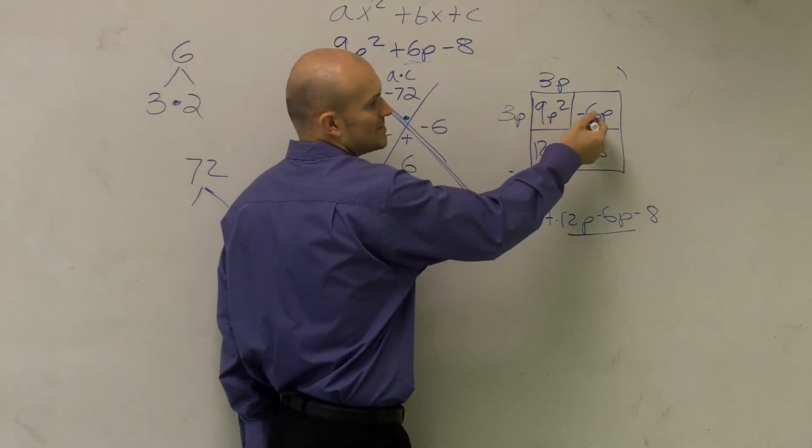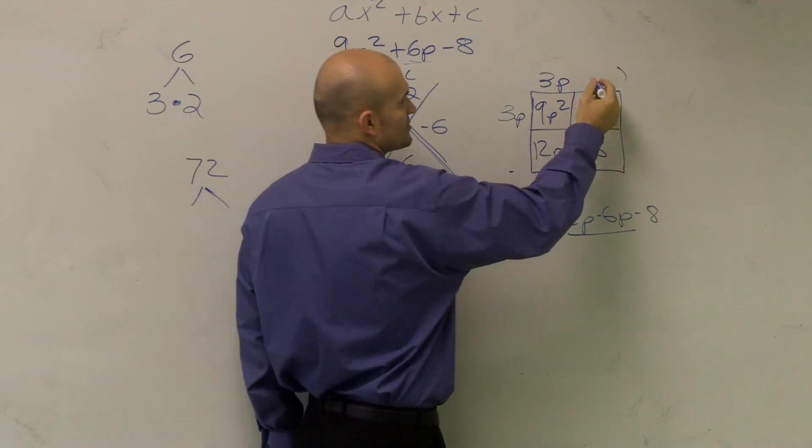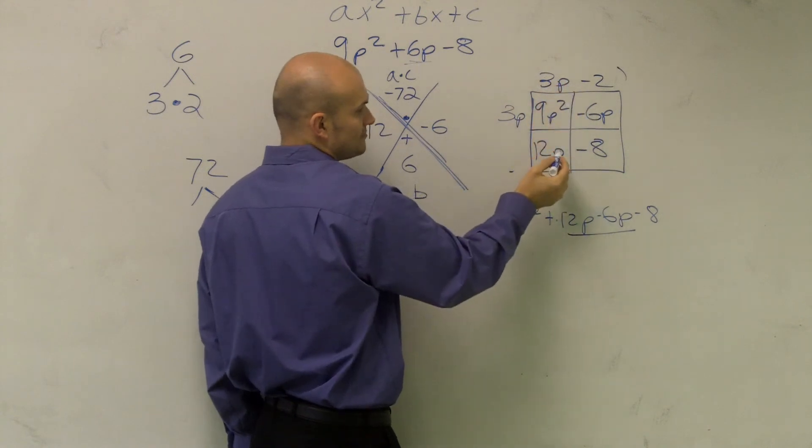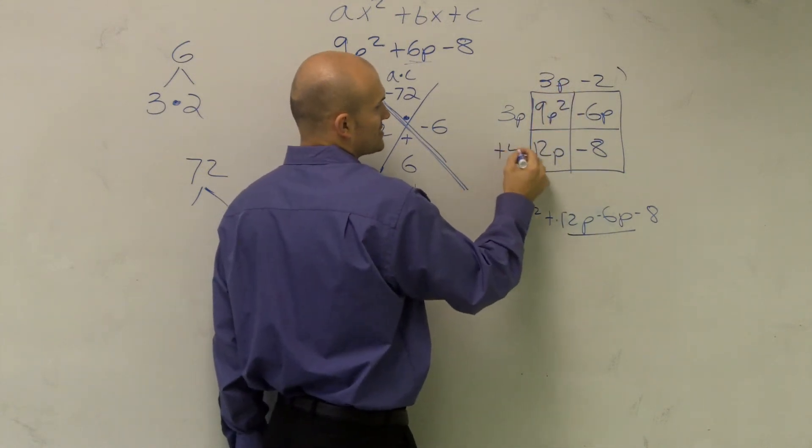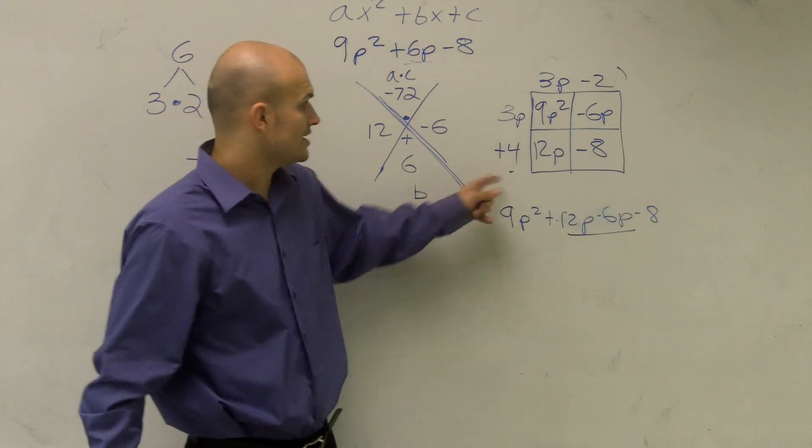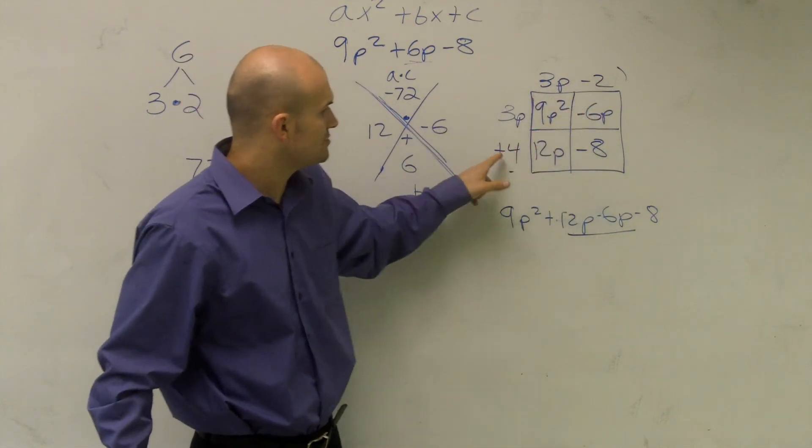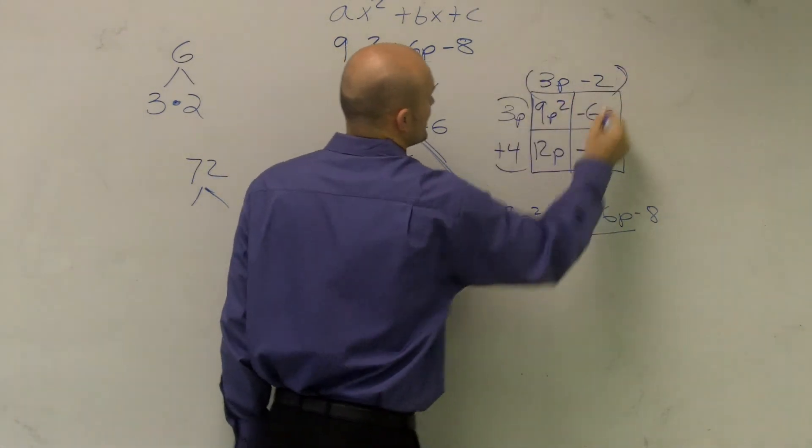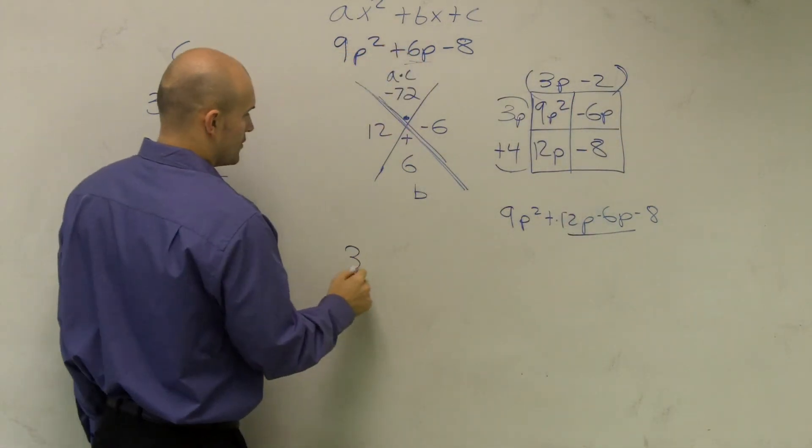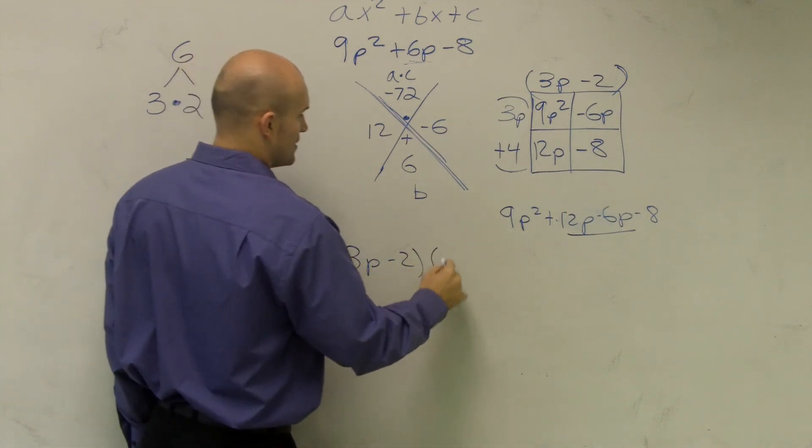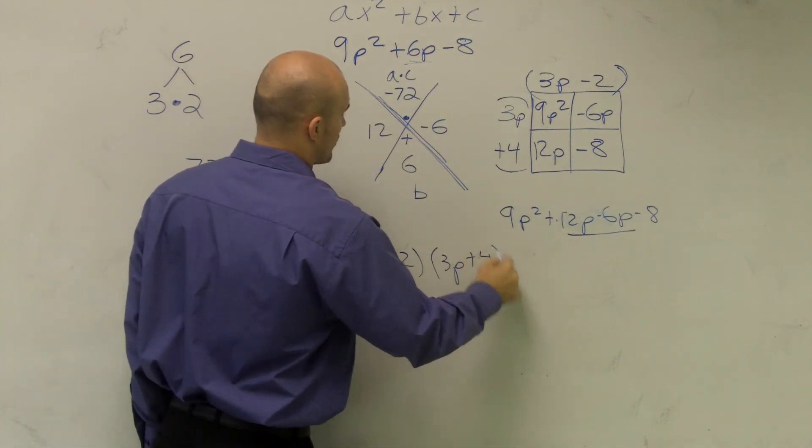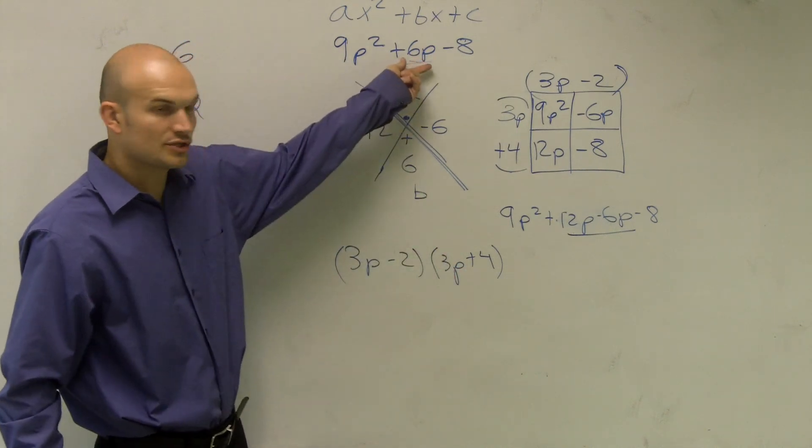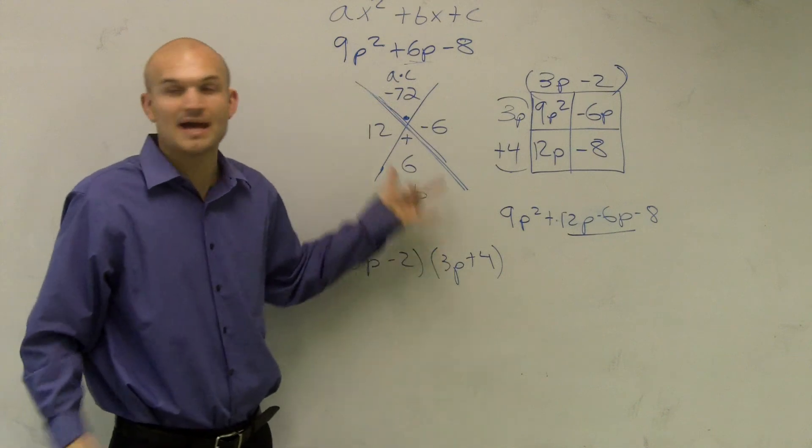3p times what gives me -6p? Well, that's going to be a -2. Then 3p times what gives me a 12p? And that's a positive 4. Then I check the area of my last box. Does -2 times positive 4 give me a -8? Yes. So now what I've done is I've created my two monomials. 3p - 2 times 3p + 4. And we look at this and we say, does this multiplied out produce that result? Do these have the same mathematical value?